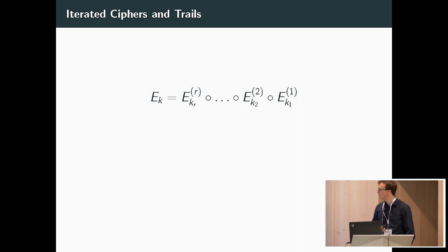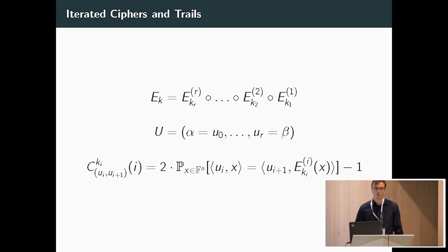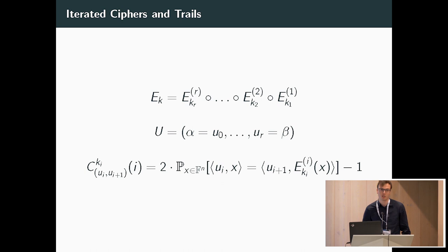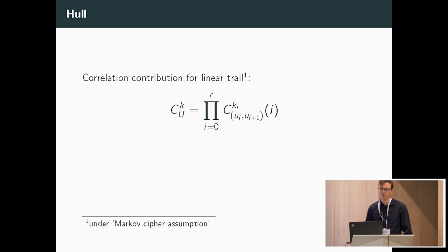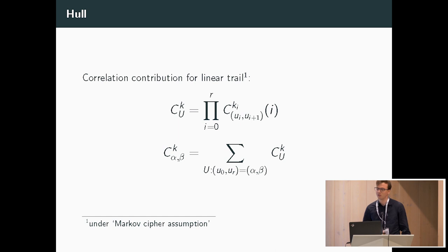For an R-round iterated cipher, we have this notion of a trail, which defines approximations over every round function. We can calculate the correlation of the approximation over every round function efficiently because it decomposes into relatively small and simple nonlinear components for which we can enumerate the full domain. We have the notion of a correlation contribution for a trail, which is simply the product of the correlations over the approximations over all the rounds. The correlation for an approximation between alpha and beta over the entire cipher is simply the sum of correlation contributions over all trails, under suitable assumptions.